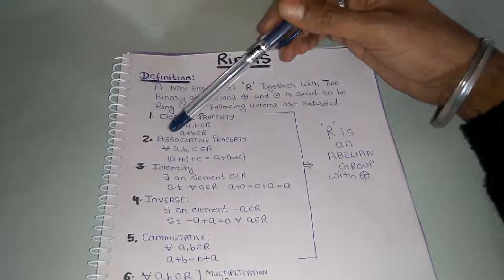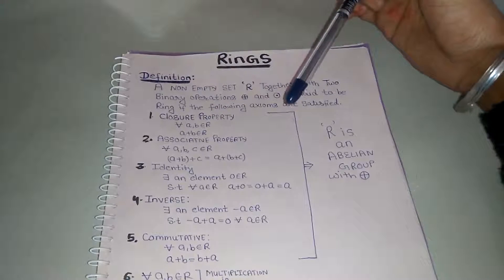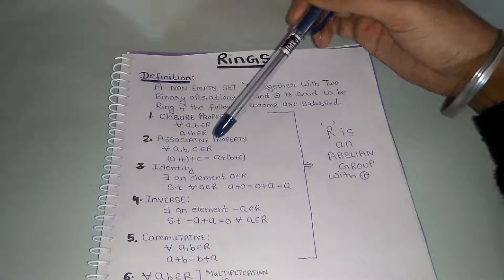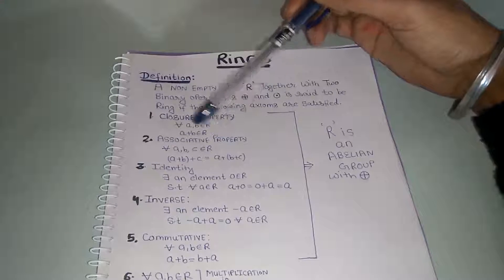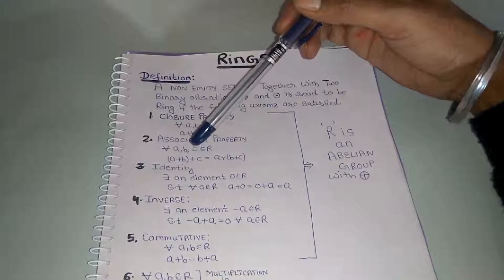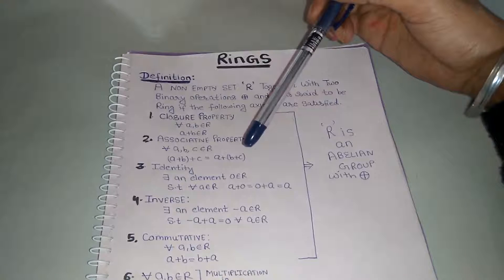Second, associative property: for all A, B, C belongs to R, we must have A plus (B plus C) is equal to (A plus B) plus C.